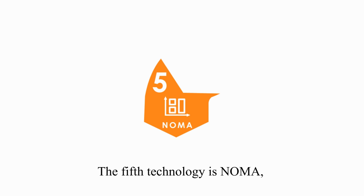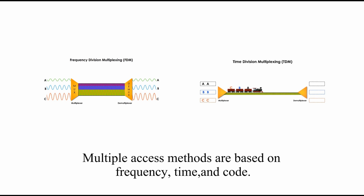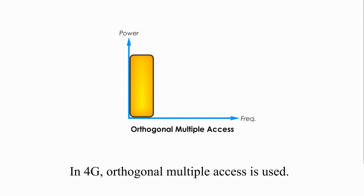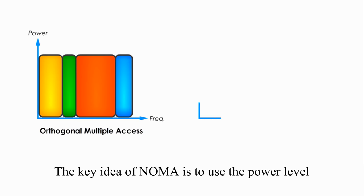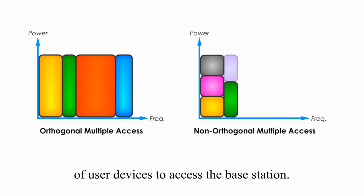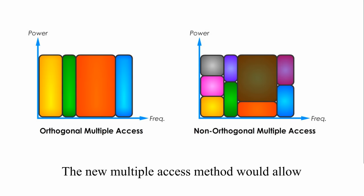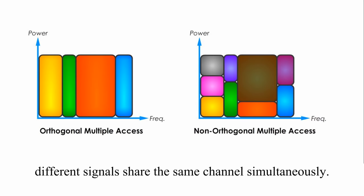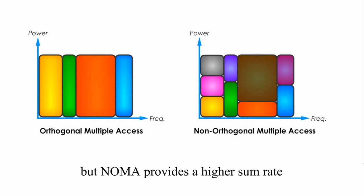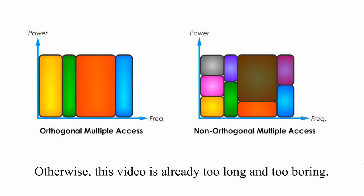The fifth technology is NOMA, non-orthogonal multiple access. In previous generations, 1G through 3G, multiple access methods are based on frequency, time, and code. In 4G, orthogonal multiple access is used. The key idea of NOMA is to use the power level of user devices to access the base station. The new multiple access method would allow different signals to share the same channel simultaneously, but NOMA provides a higher sum rate than orthogonal methods. These two access methods, orthogonal and non-orthogonal, would be two separate videos on my channel. Now, here I try to skip the details, otherwise this video is already too long and too boring.